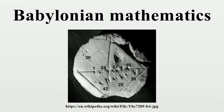Reciprocals such as 1/7th, 1/11th, 1/13th, etc. do not have finite representations in sexagesimal notation. To compute 1/13th or to divide a number by 13, the Babylonians would use an approximation, applying algebra as well as arithmetical calculations.